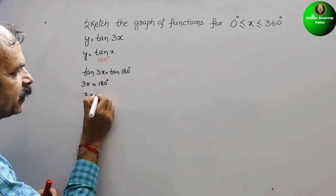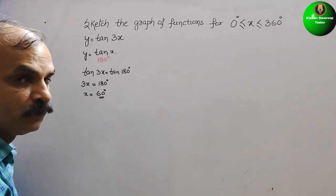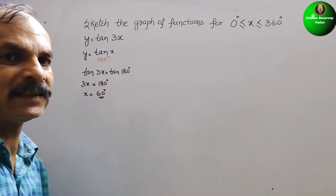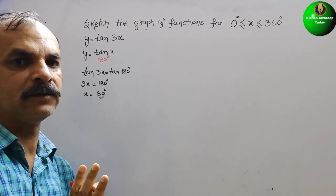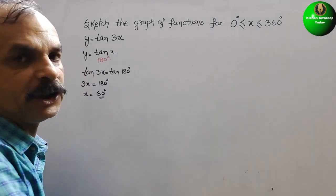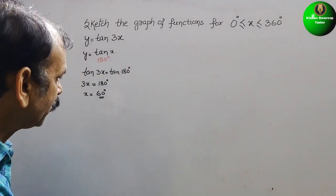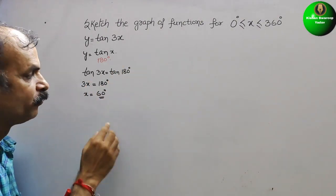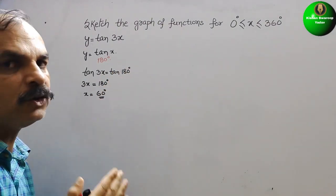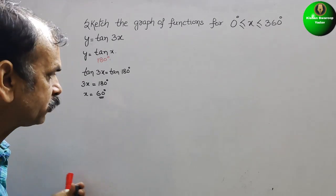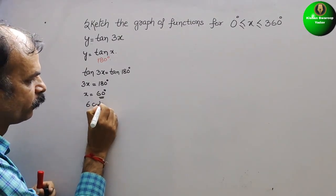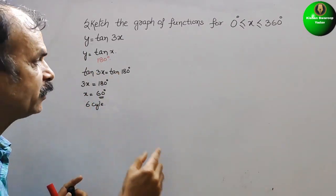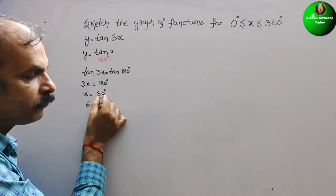So x = 60°, because 180 divided by 3 is 60°. That means if you draw the tan x wave it should complete 2 cycles in 360°. But here for tan 3x, it will complete 6 cycles, because 360 divided by 60 gives 6 cycles. So here one period is 60°, and we will draw those 6 cycles.